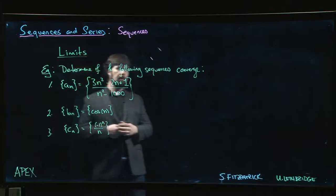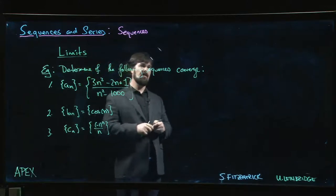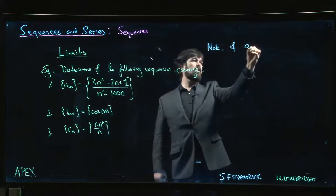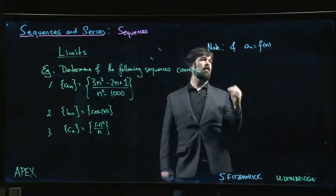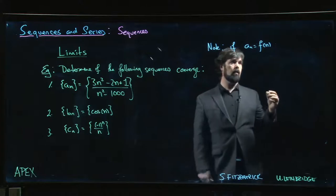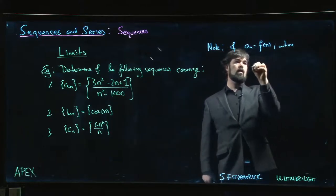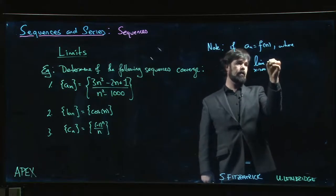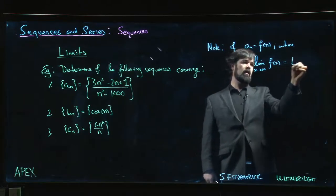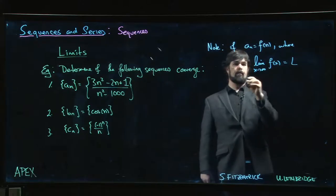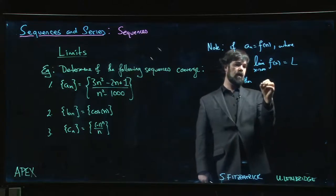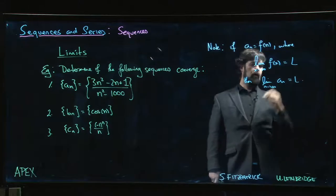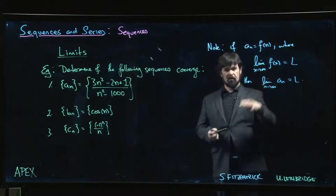One thing worth pointing out is that if your sequence is given by f of n, and we know how to do the limit as x goes to infinity by replacing n with a real variable x and we calculate that limit and it exists, then the limit as n goes to infinity of a_n will agree.